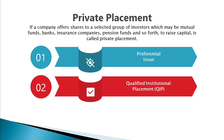Then comes Qualified Institutional Placement (QIP). Qualified institutional buyers are mostly representatives of small investors who invest through units of mutual funds, ULIP schemes of insurance companies, and pension funds. When any placement of shares is done to such buyers during a follow-on offer, it is called a Qualified Institutional Placement.